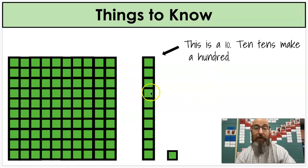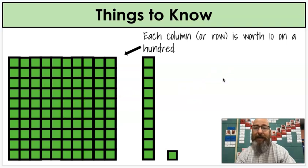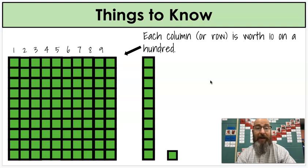So now, of course, now this is still a ten, and ten tens make a hundred. This is a hundred. And each column or row is worth ten on a hundred. And we see the columns going up and down, and we see the rows going side to side. And we can count those easily as well. There's one, two, three, four, five, six, seven, eight, nine, ten columns. And that's ten tens.